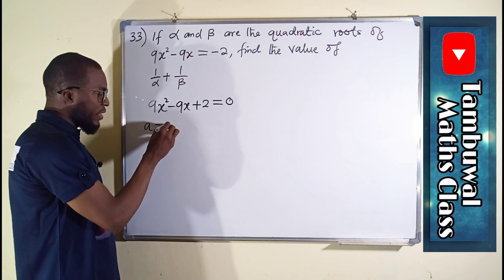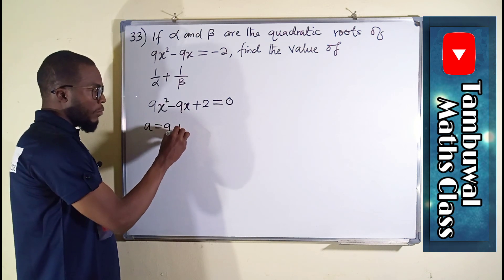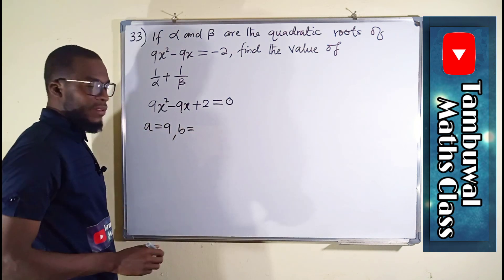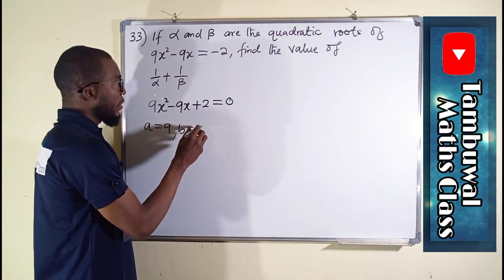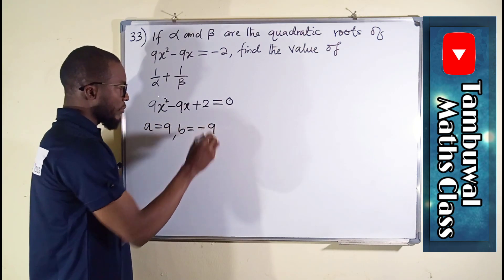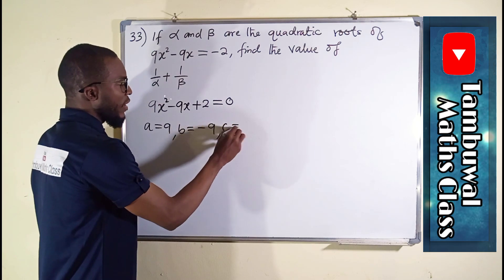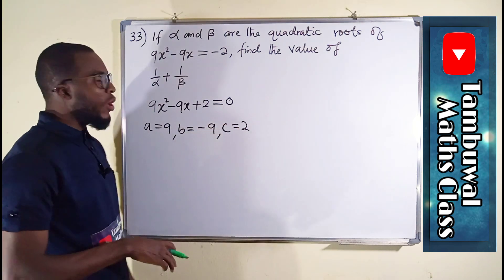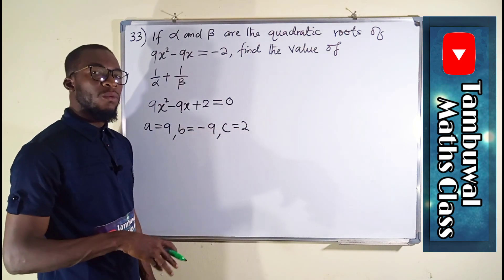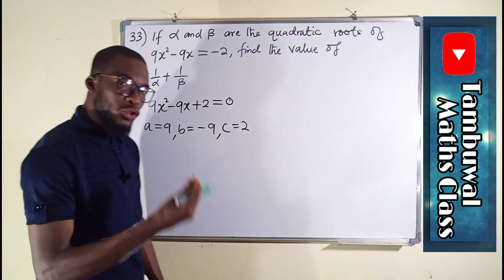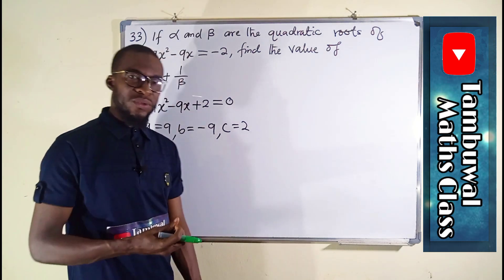You know the leading coefficient is a, which is 9 here. B is the coefficient of x, which we have here as minus 9. And C is the constant, which we have as 2.